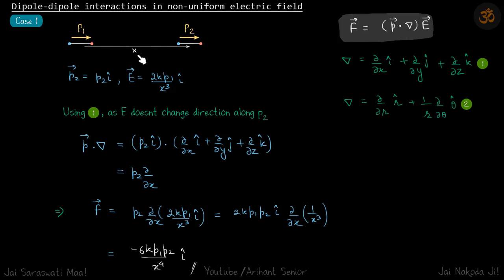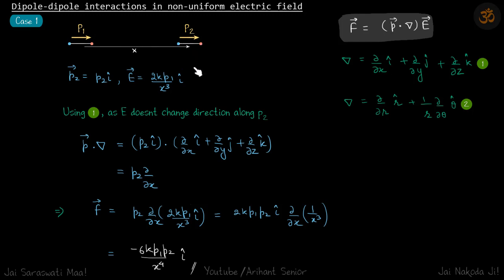The distance between them is x. We need to find the force on p2, so p2 we can write as p2 î-cap, and E due to the first dipole is 2k·p1 / x³ î-cap. We are going to use the Cartesian del operator because E does not change direction along p2. As you move along p2, the direction of E remains the same — it stays along î-cap.